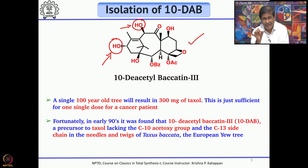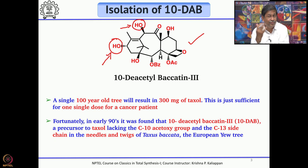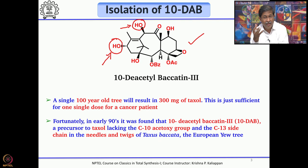Through functional group transformation one can make Taxol from 10-deacetylbaccatin III. Most importantly, unlike the bark, the leaves grow faster. You can pluck the leaves, isolate the 10-deacetylbaccatin III, and make Taxol. After some time the leaves will grow again, so you can repeatedly harvest — the leaves played a very important role initially in the synthesis of Taxol.